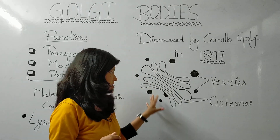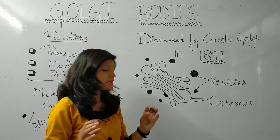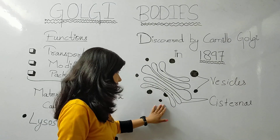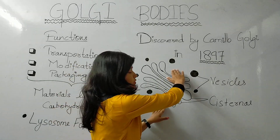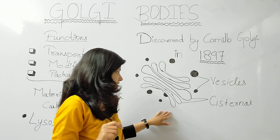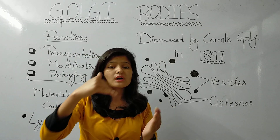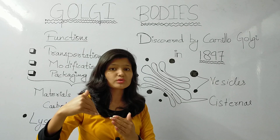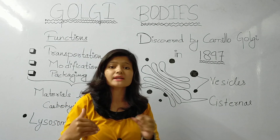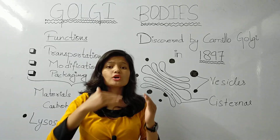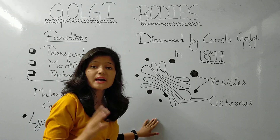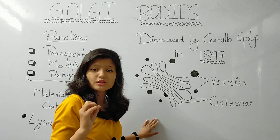Now, regarding its position, there are two phases or faces. One side is the cis phase and one side is the trans phase. The cis phase is the endoplasmic reticulum side.